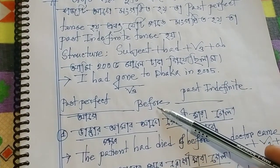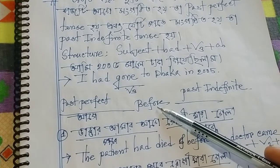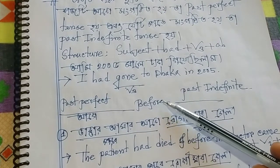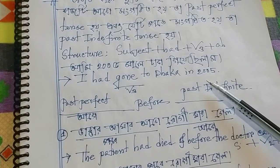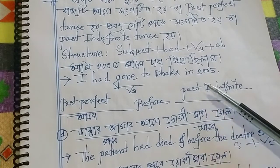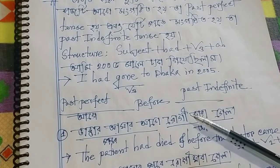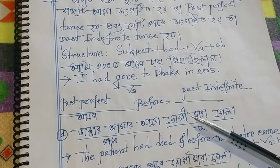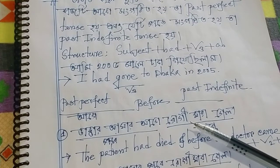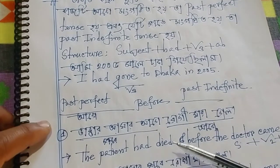You should remember: Past Perfect uses had + V3 + object, while Past Indefinite uses V2 + object. After that comes the Past Indefinite Tense, and before that is the Past Perfect Tense.